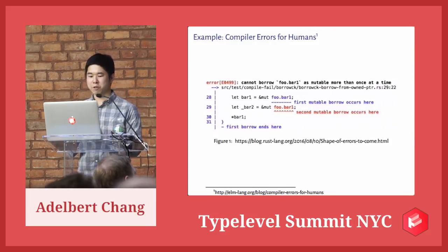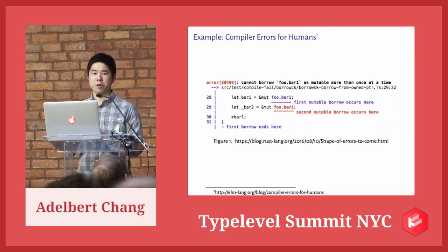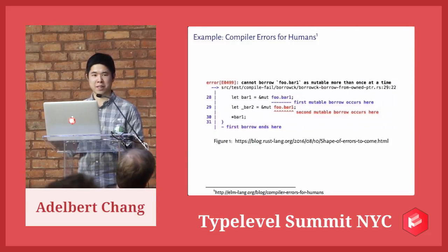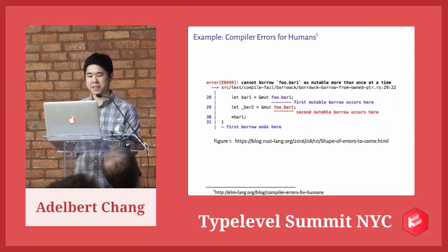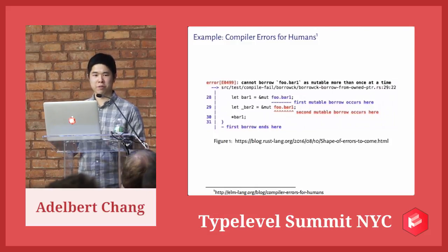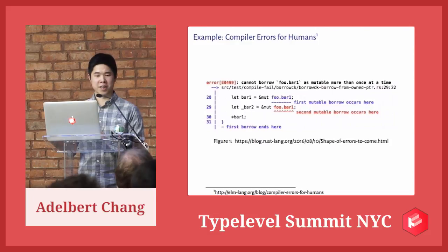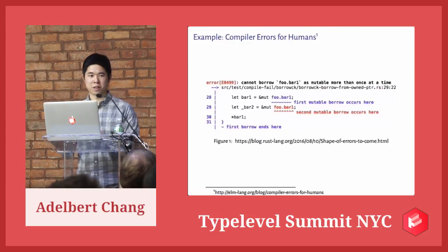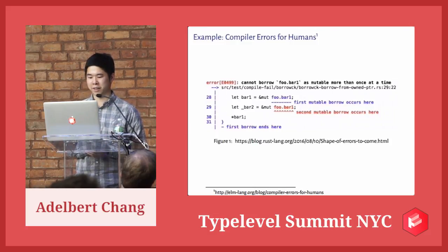In Rust, the type system tracks mutability and if you're doing something unsafe, it just fails to compile and tells you where you're wrong. With human-friendly compiler messages, that becomes a lot more like a conversation the compiler is having with you. You say 'this is my mutable variable,' and the compiler says 'you're messing up here.' Rust has affine types that track ownership, and with friendly messages, that's really cool.